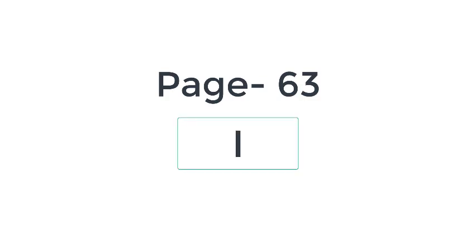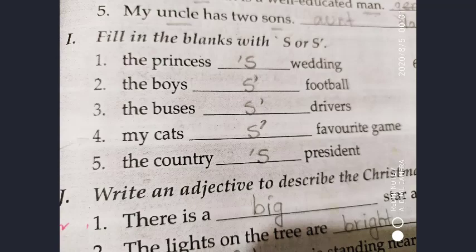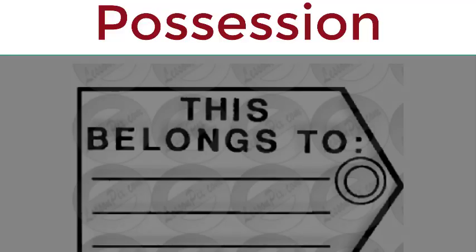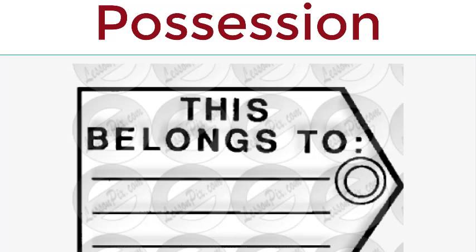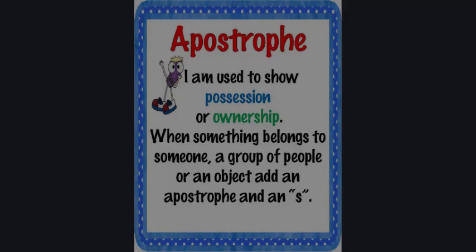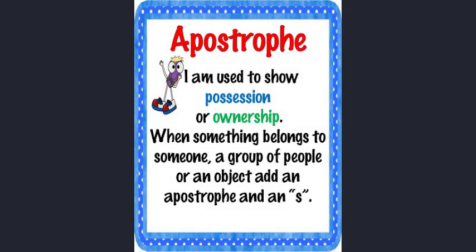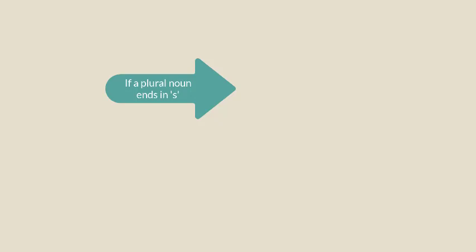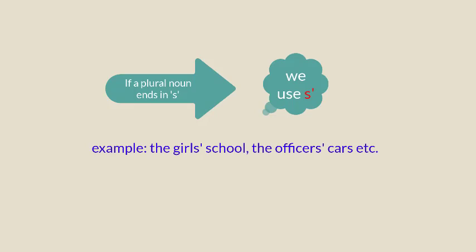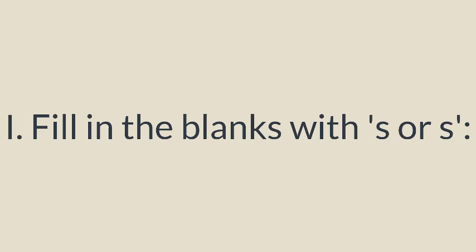Go to page number 63 and find Question Number I. Before starting, let's revise the rules for possession once again. It is very simple: we use an apostrophe S to show possession for any singular or plural noun, but with one exception — if any plural noun ends with an S, then we use only the apostrophe.